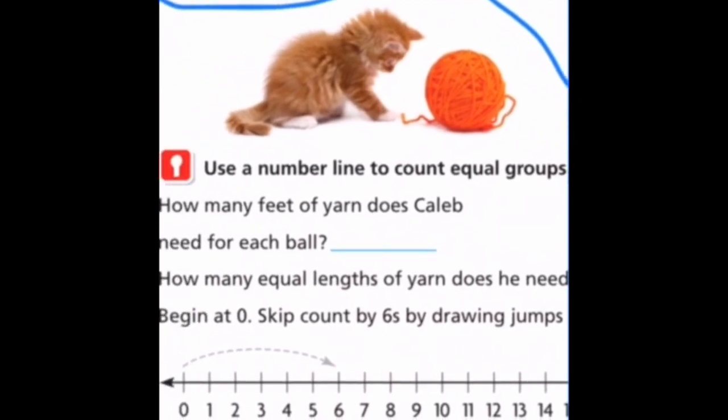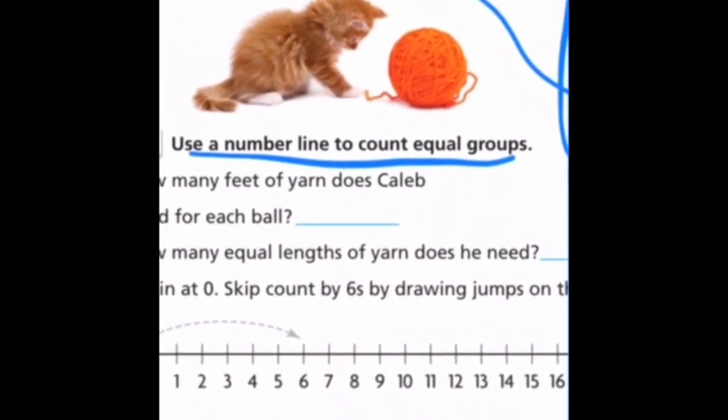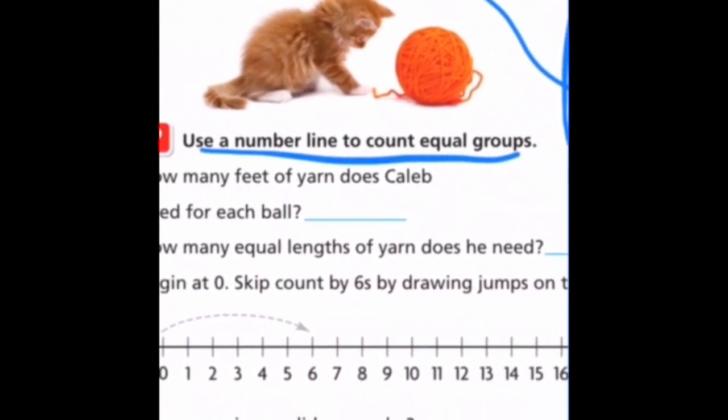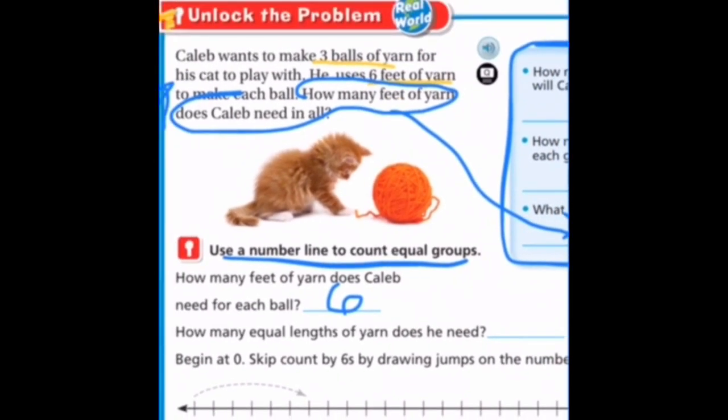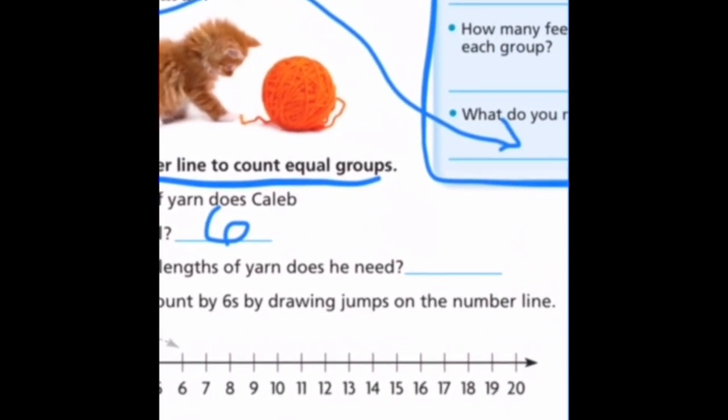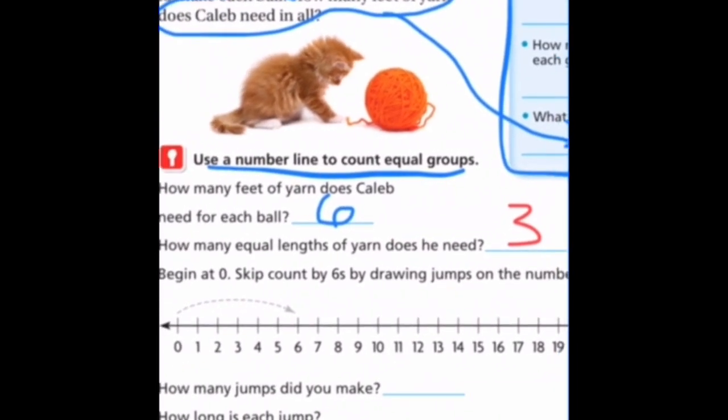Alright. It says here, to use a number line to count equal groups. How many feet of yarn does Caleb need for each ball? And we said that was six feet for each ball. How many equal lengths of yarn does he need? And again, three balls of yarn, so he's going to need three equal lengths.